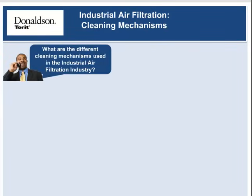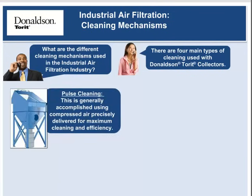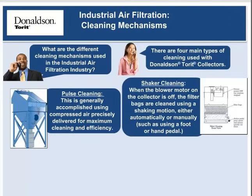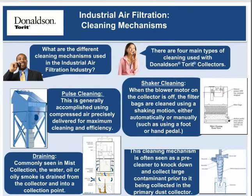There are four main types of cleaning used with Donaldson Torritt collectors. Pulse cleaning is generally accomplished using compressed air precisely delivered for maximum cleaning and efficiency. Shaker cleaning occurs when the blower motor on the collector is off and the filter bags are cleaned using a shaking motion, either automatically or manually, such as using a foot or hand pedal. Draining is commonly seen in mist collection, where water, oil, or oily smoke is drained from the collector into a collection point. Mechanical separation is often used as a pre-cleaner to knock down and collect large contaminant prior to it being collected in the primary dust collector.